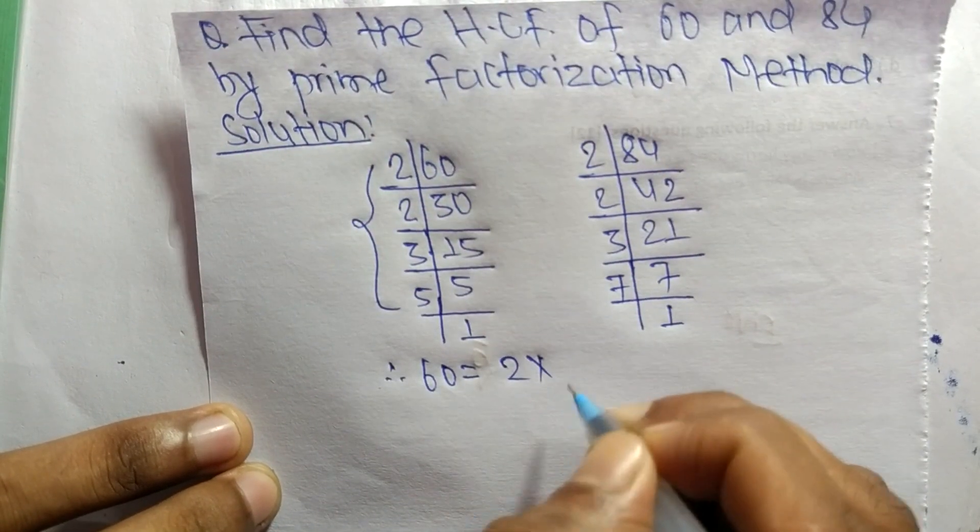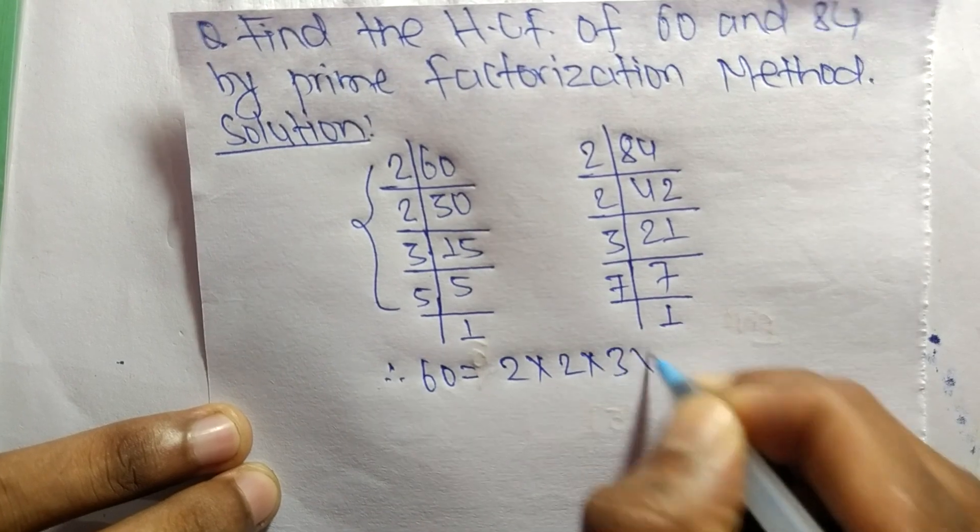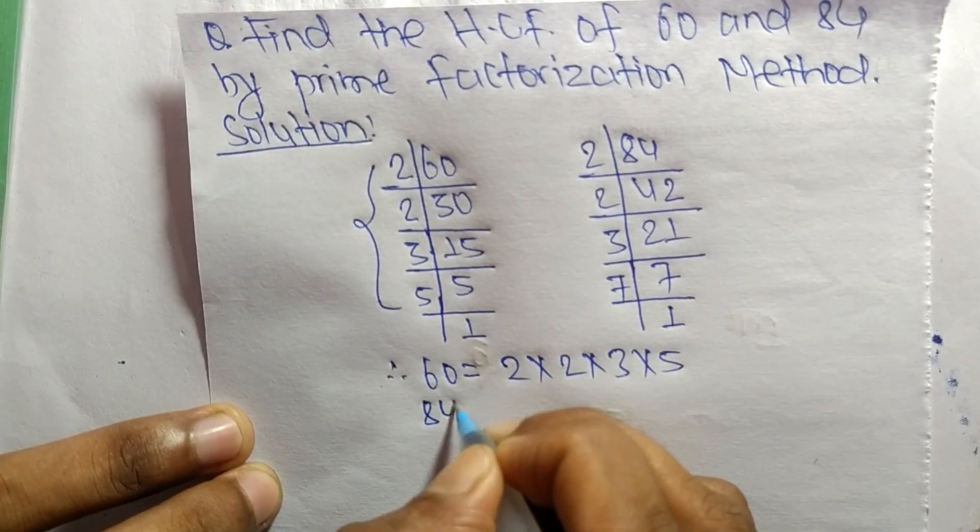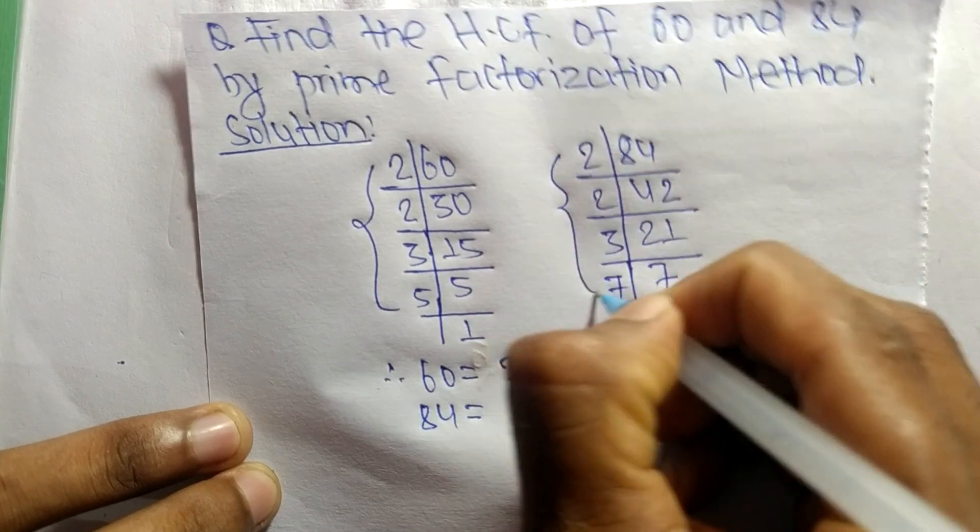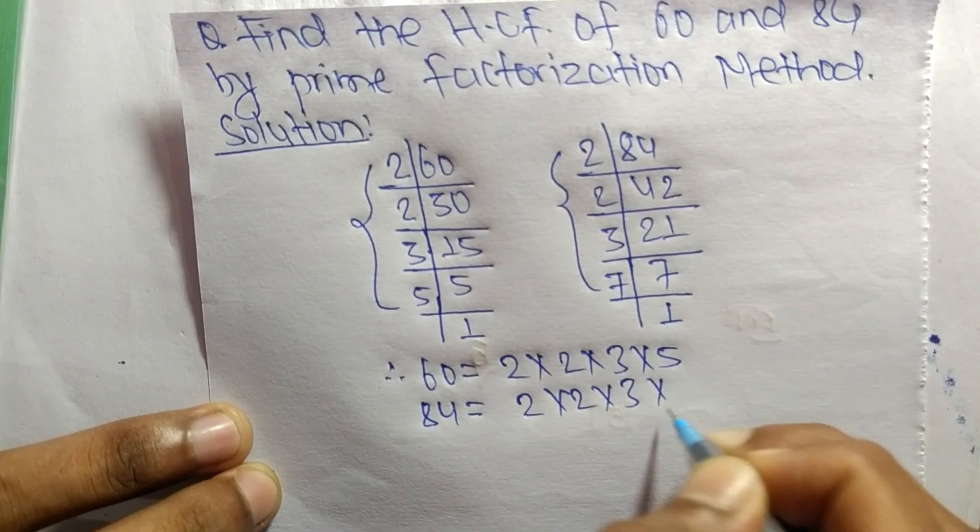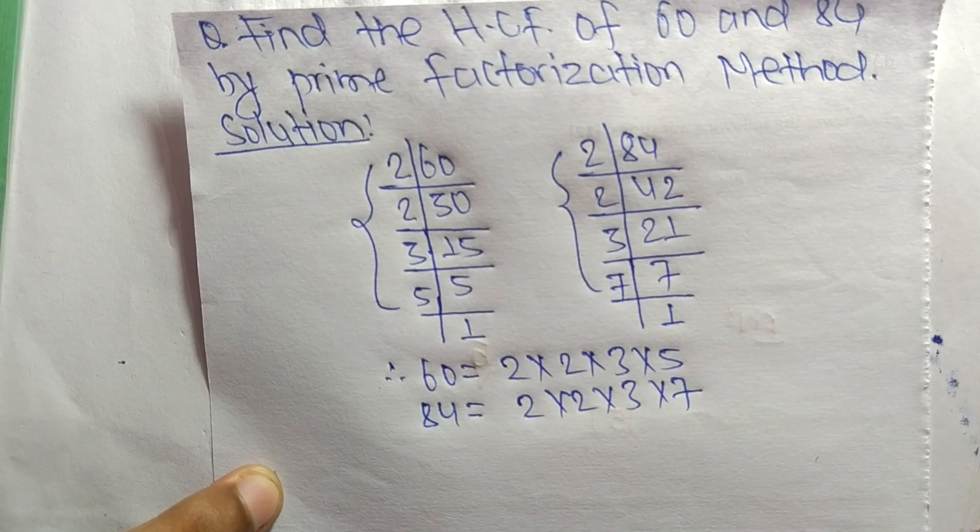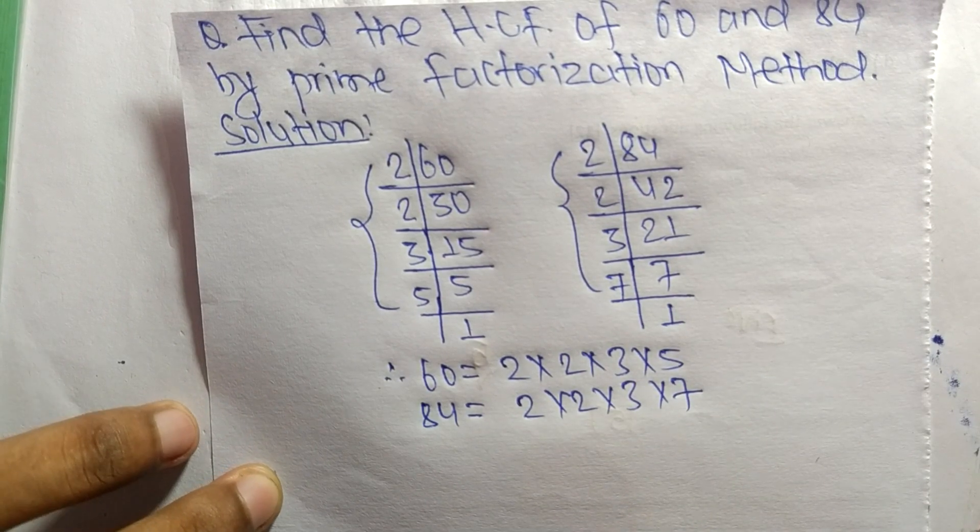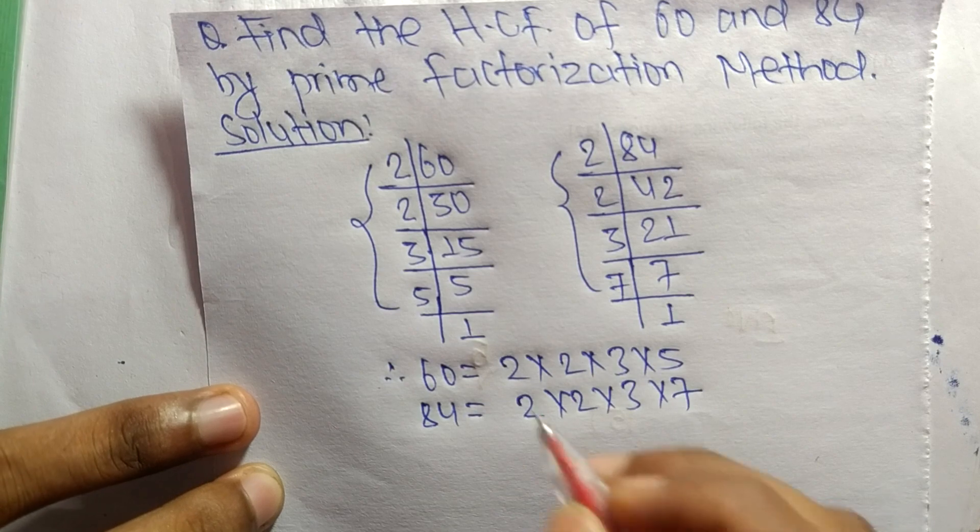from this part, 2 times 2 times 3 times 5. Likewise, 84 equals, from this part, 2 times 2 times 3 times 7. Now we select the common factors in these prime factorizations.